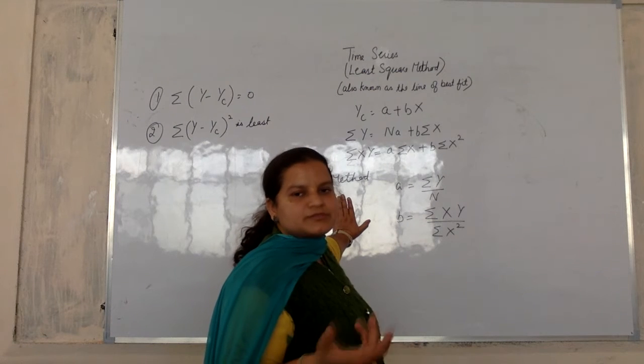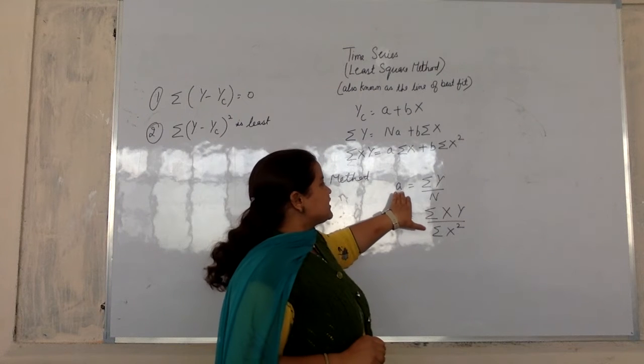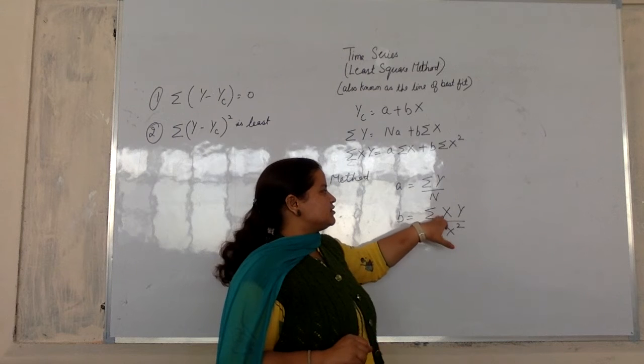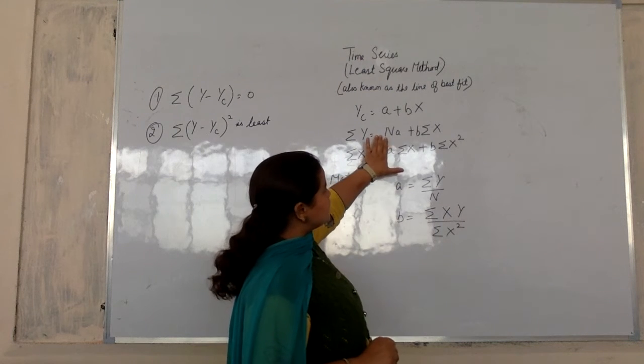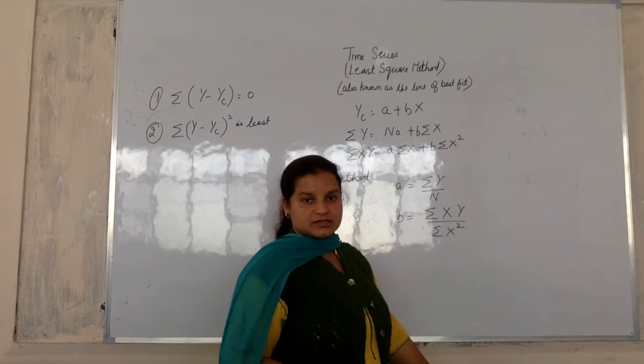So in shortcut method you have summation x is equal to zero. A is equal to summation y over n and b is equal to summation xy over summation x square. This formula is equal to this, but it is shortcut. Now I will tell you how to derive this formula.